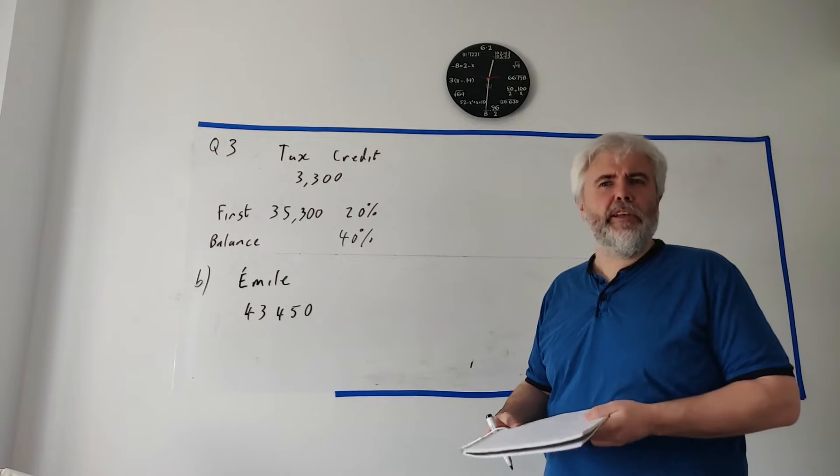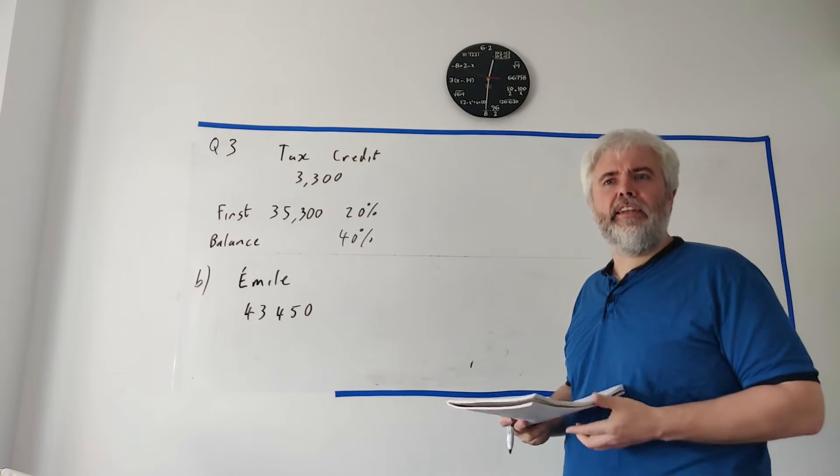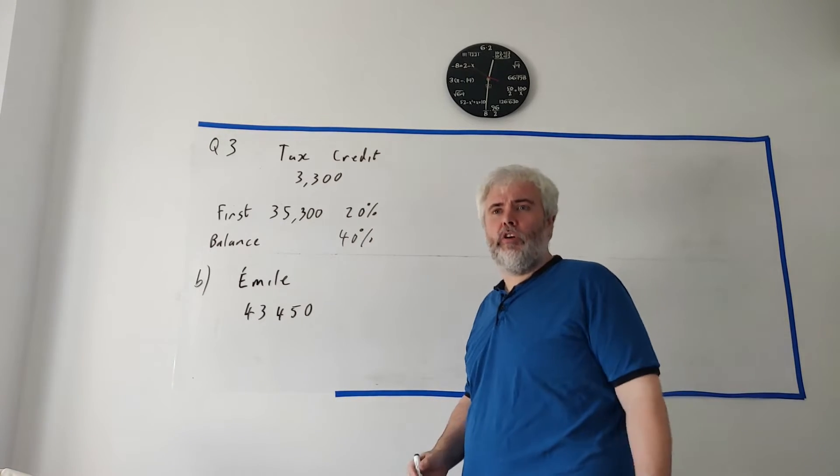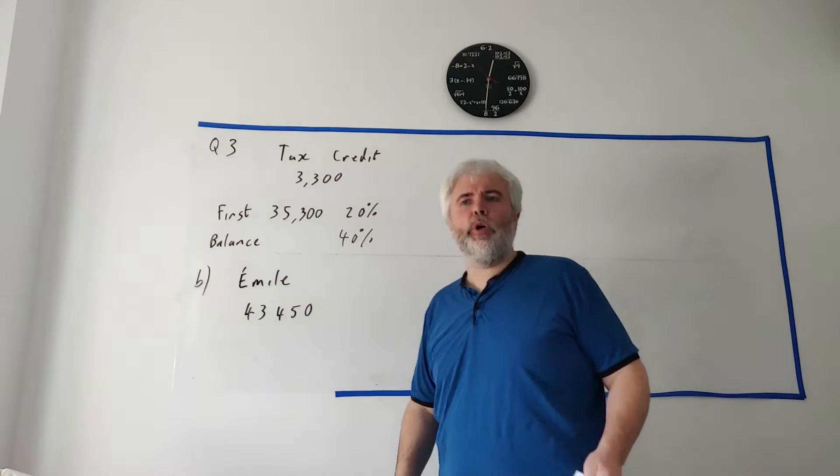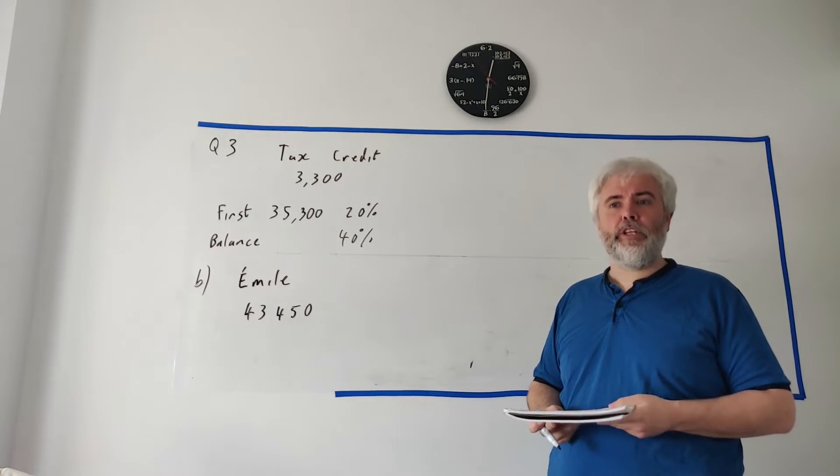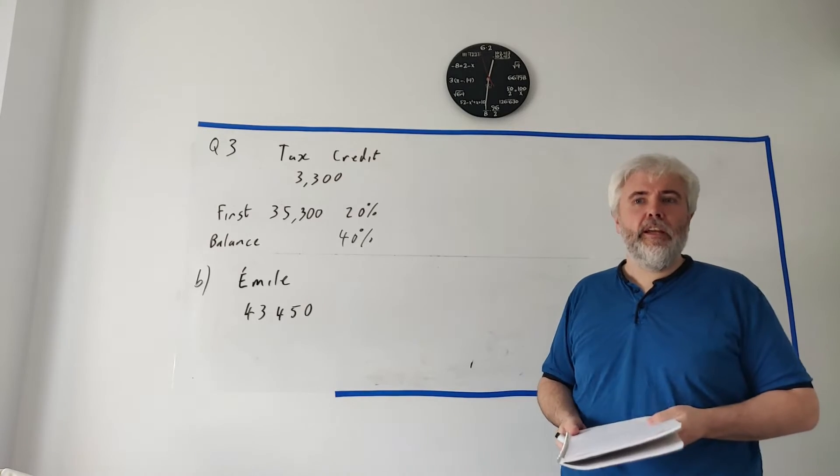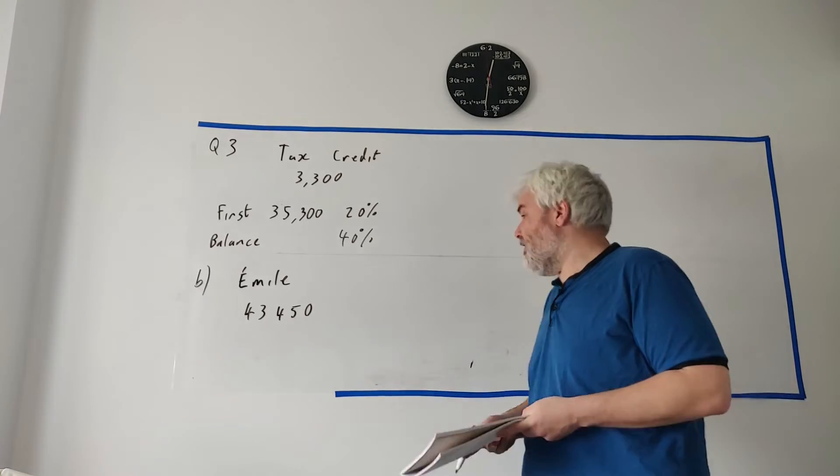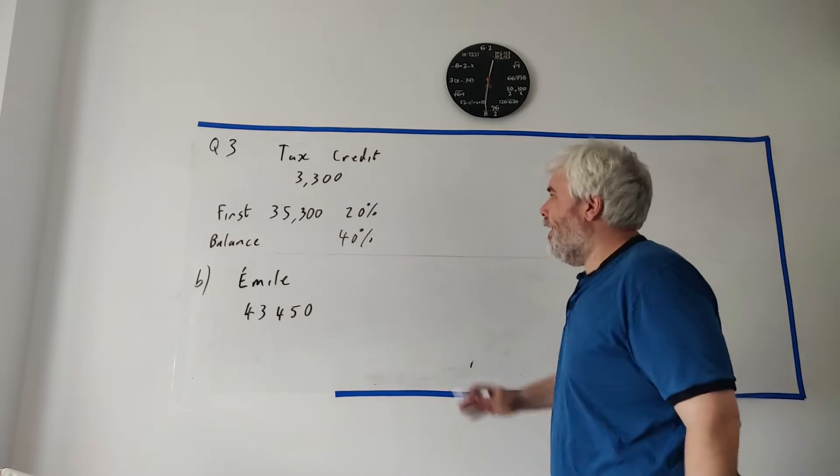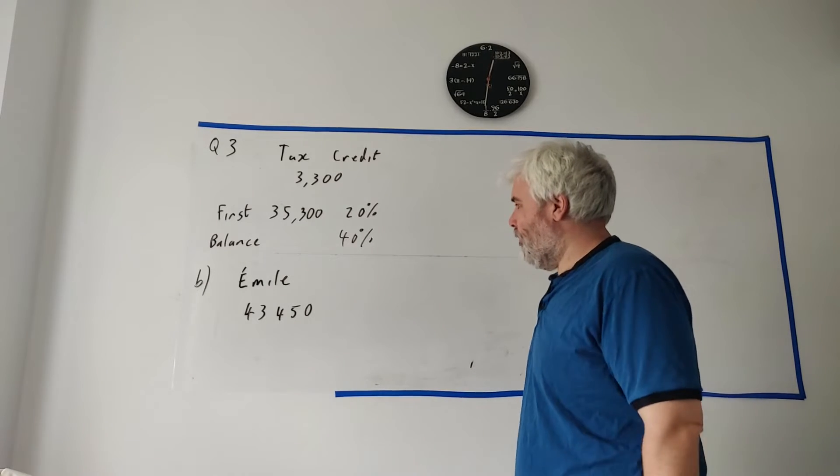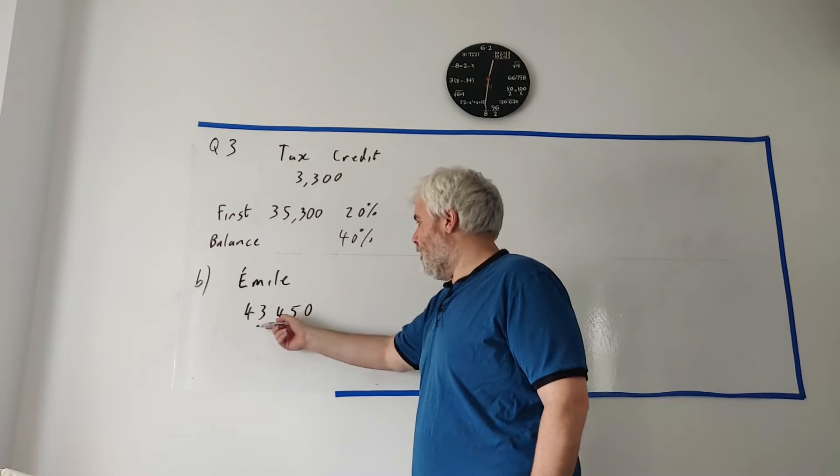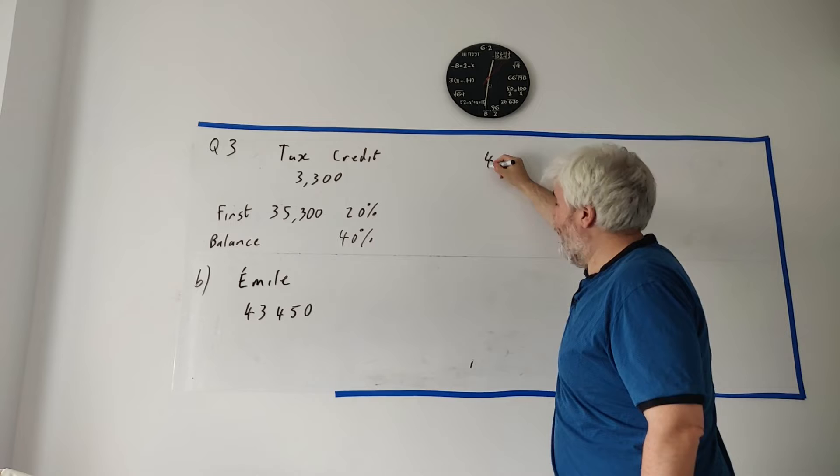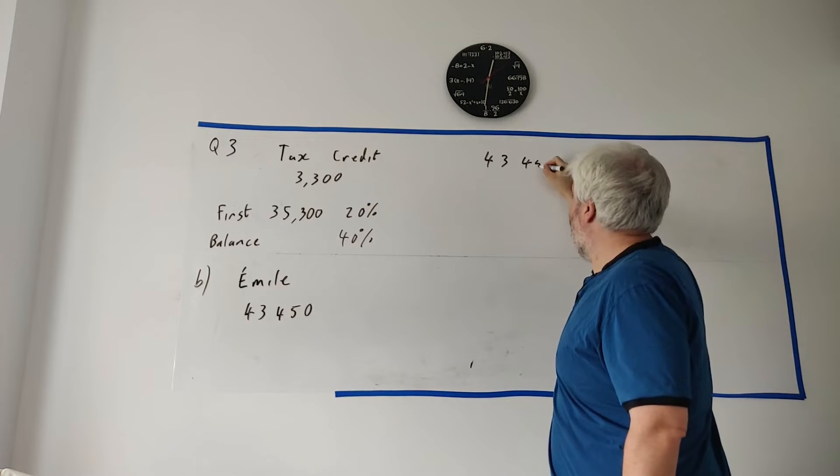Part B is very similar to part A. Again, they give us her gross. In this case, Emile. Her gross income is 43,450. What is her net? Okay, identical to the first one except something's going to change in the middle. She starts off with this. She gets paid this much money. Let's write it again up here: 43,450.